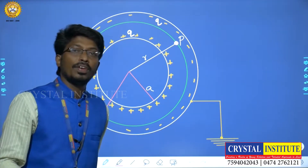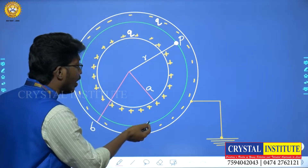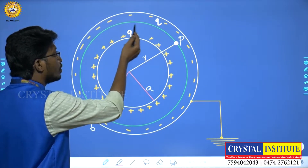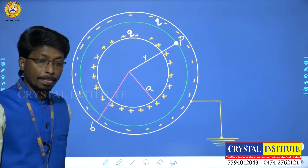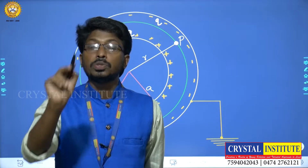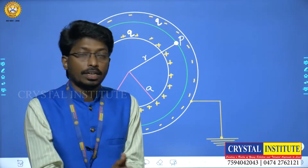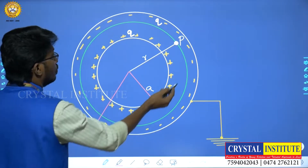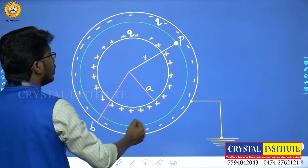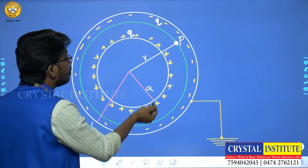What is the electric field? We use a Gaussian surface — shown in green — which is a Gaussian sphere drawn between the two shells at point P. The electric field can be determined using this Gaussian surface enclosing the charge.